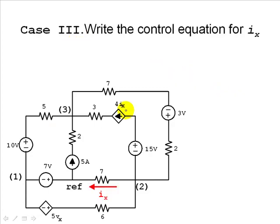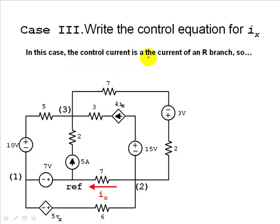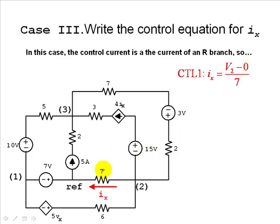Case 3: the controlling current IX is the current in this 7-ohm resistor. The controlling current is simply the current in an RV branch, so that current can be written as V2 minus the reference voltage, which is 0, divided by 7 ohms. That is your controlling equation 1.